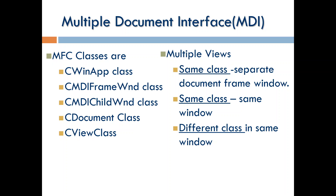For MDI forms, we use a class called CMDIFrameWnd — CMDIFrameWindow class. That is the class used to create an MDI parent window. Inside the parent form, you can have any number of child forms, created using the CMDIChildWnd class. These are the three main classes used to create an MDI parent and MDI child.